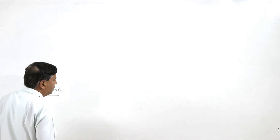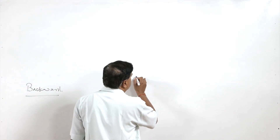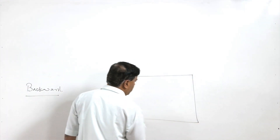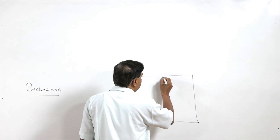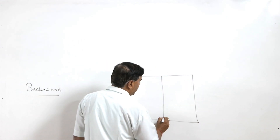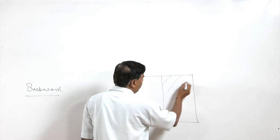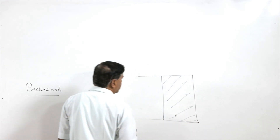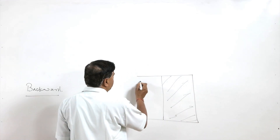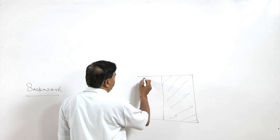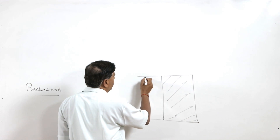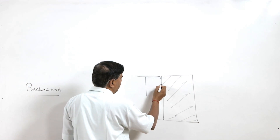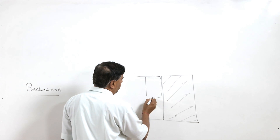In backward extrusion the configuration is slightly different. Here we have a closed end die cavity and the billet is placed in the cylindrical container. Then we use one die having the opening of the desired shape.